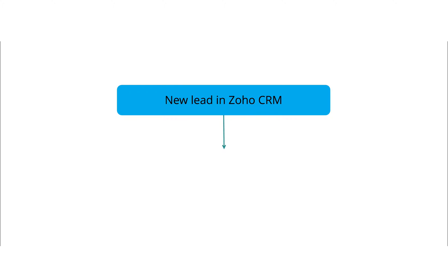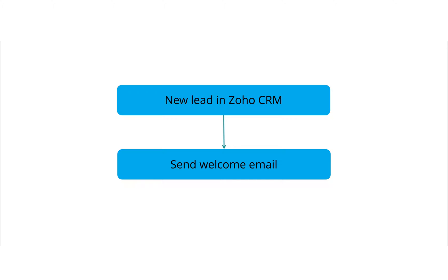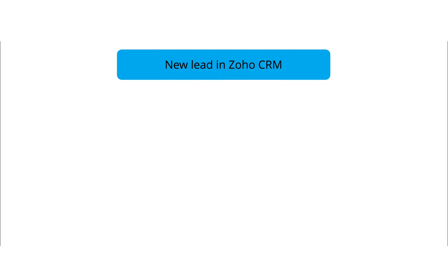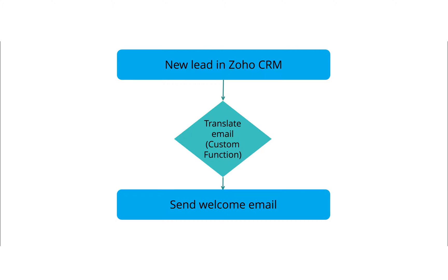Say you generate new leads every day and you want to set up a workflow to send them welcome emails automatically. This is a simple task that we all will like to automate. For this, we can use one of the already available actions like send email in Zoho Mail, Gmail, or the notification section under the logic tab. But if we need to send this email in the native language of the recipient, then that's some extra piece of tailoring we need to do, which is where we need to use custom function.